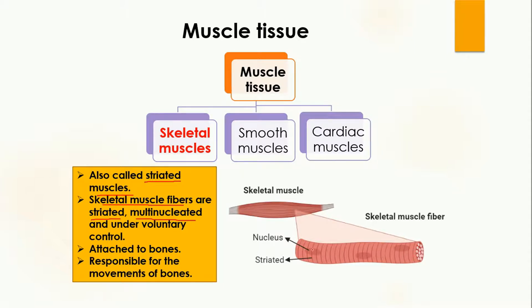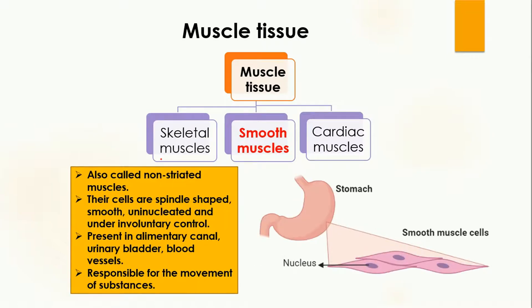Along with these features, the muscle tissues are under voluntary control. Voluntary control means that you can control the movement of these tissues. These tissues are attached to the bones, and because of their attachment the movement of body parts takes place. The second type is smooth muscle.